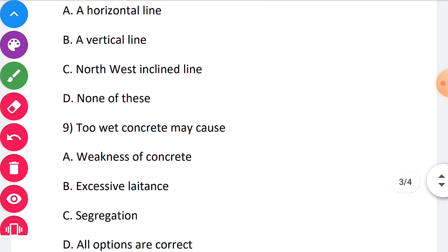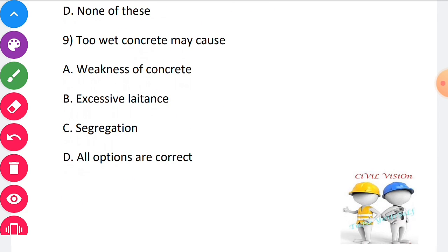Ninth one: Too wet concrete may cause weakness of concrete, excessive laitance, and segregation. The correct answer for this question is all options are correct, option D.